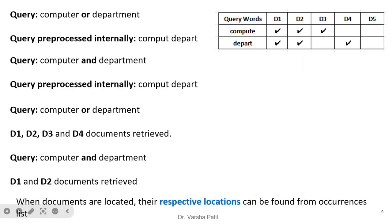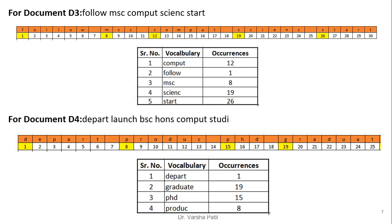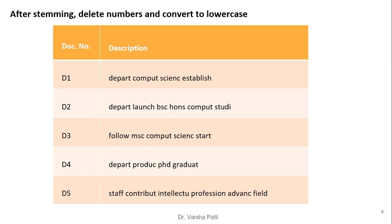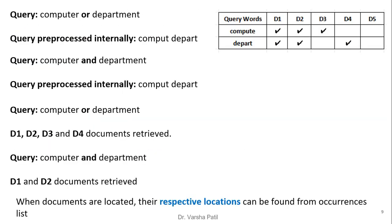Now we will see how simple queries are solved with the inverted file index. For example, the query is 'computer OR department'. When we made the inverted file index, we stored the logical form of the document — not 'computer' or 'department' completely, but after the stemming operation. So when a query is given, it is also pre-processed internally and converted into logical form.